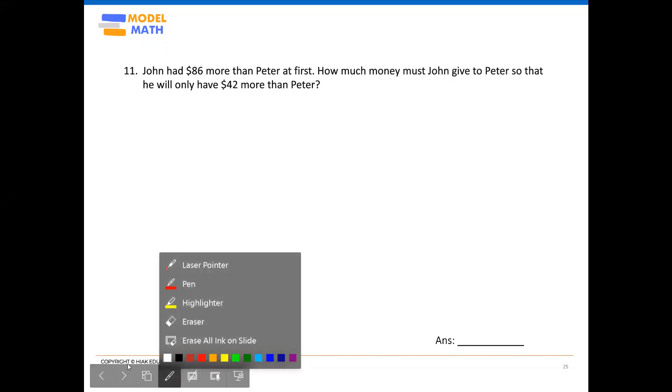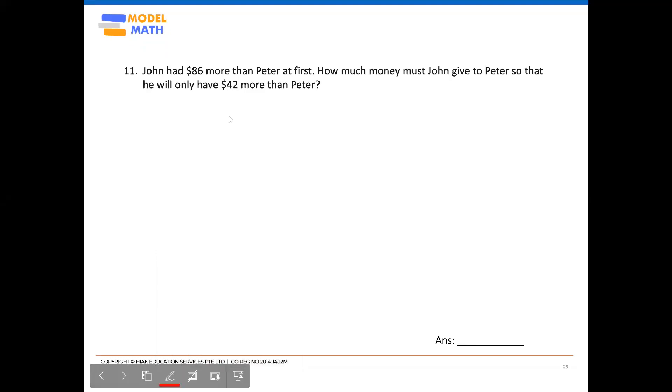So for this question, they start off by telling you that John has $86 more than Peter. So this $86 is the difference between John and Peter. However, the question does not tell you how much John has or how much Peter has. So we can actually start off by drawing a comparison model for John and Peter, showing the $86 difference that John has more than Peter.